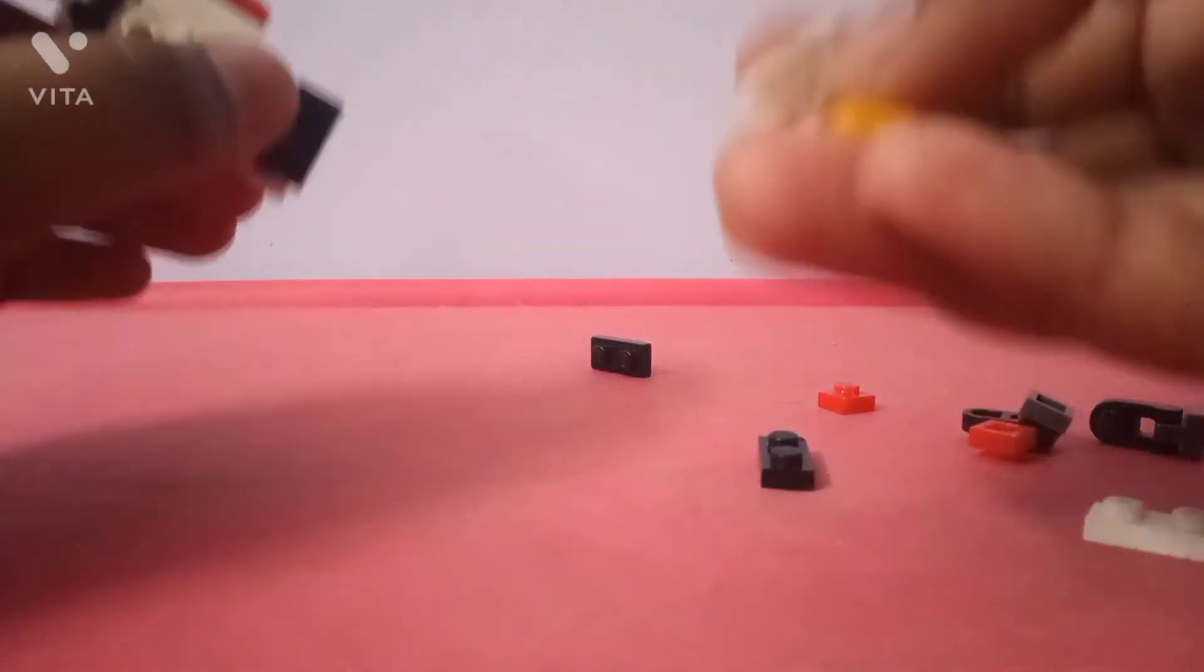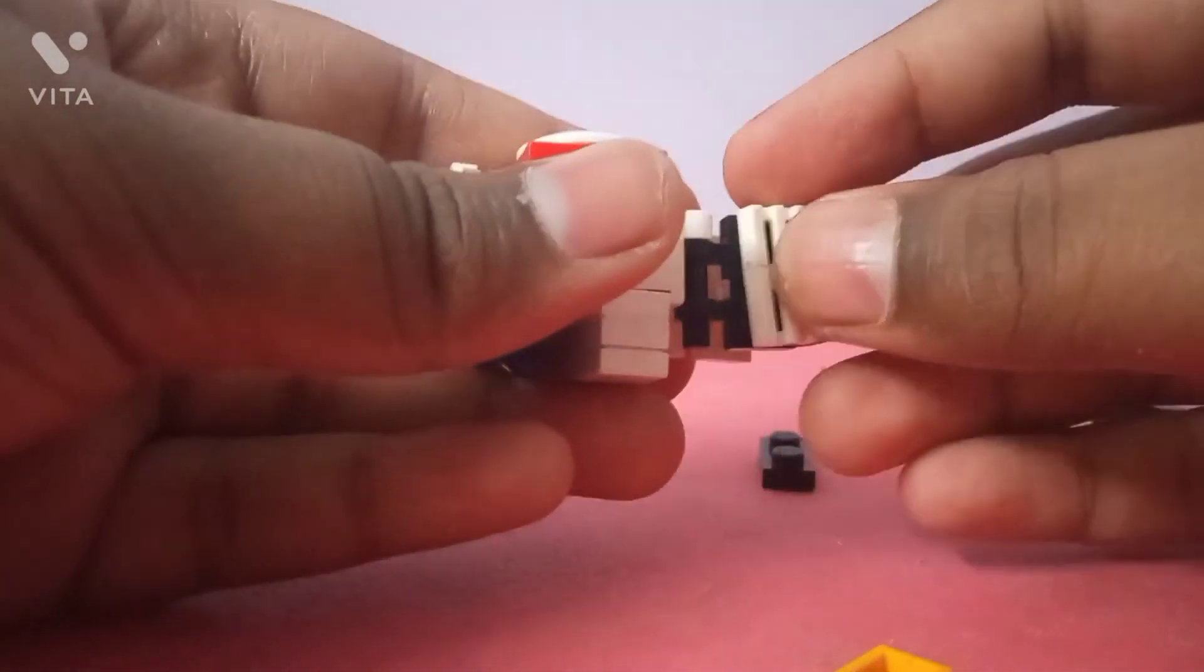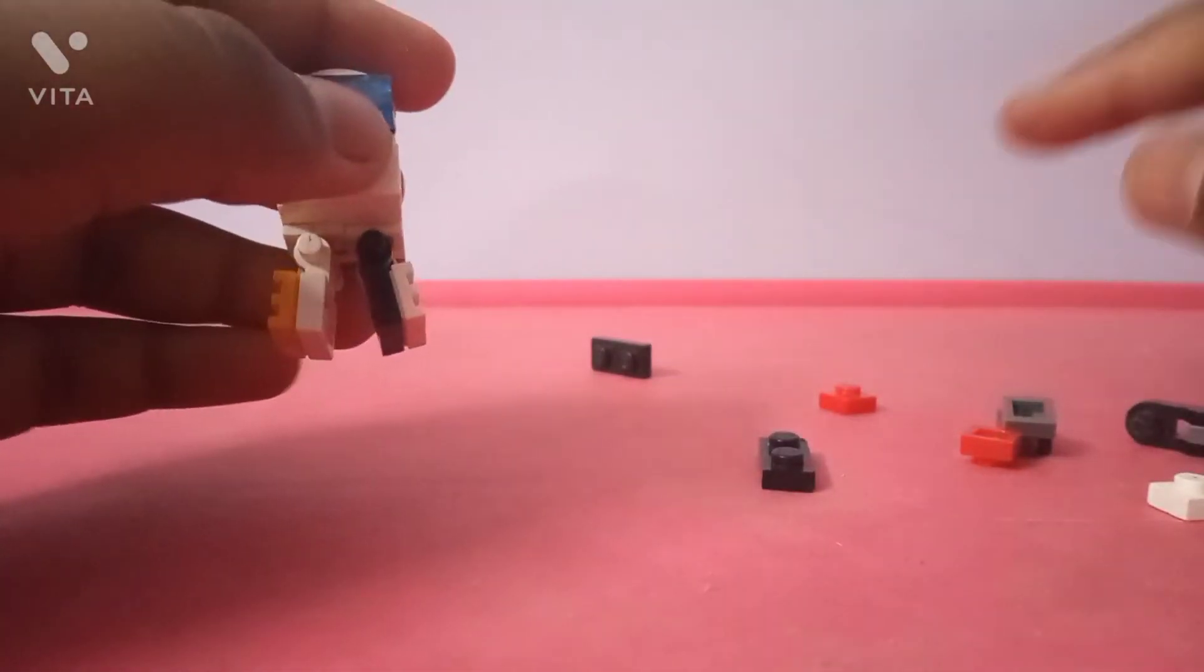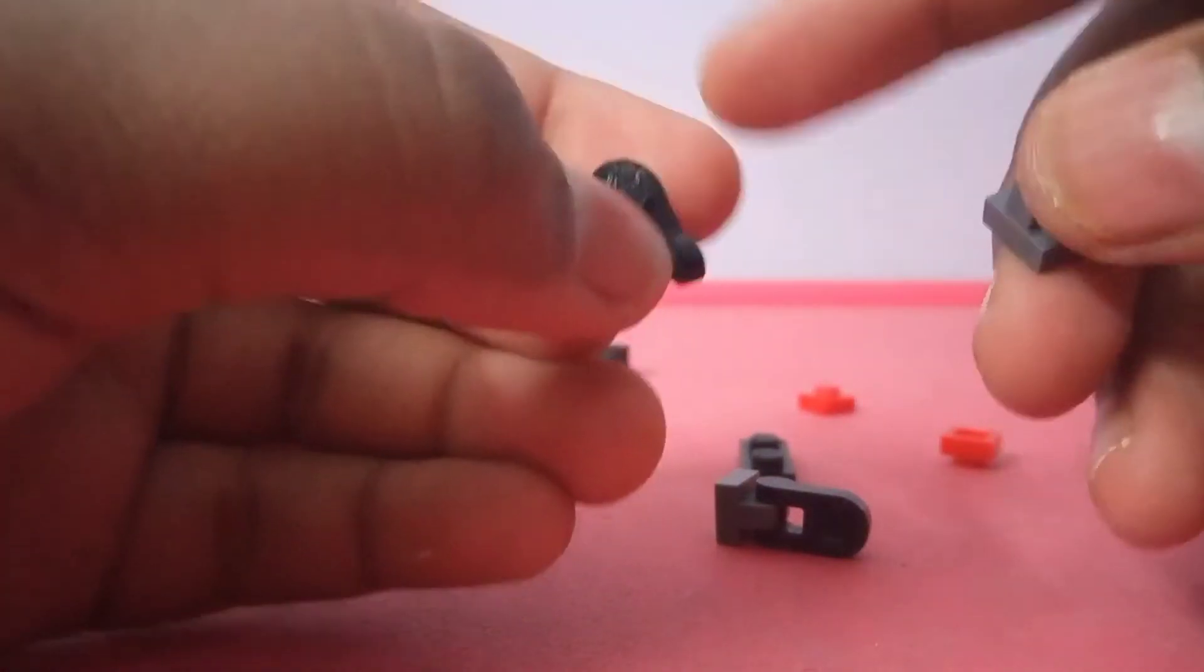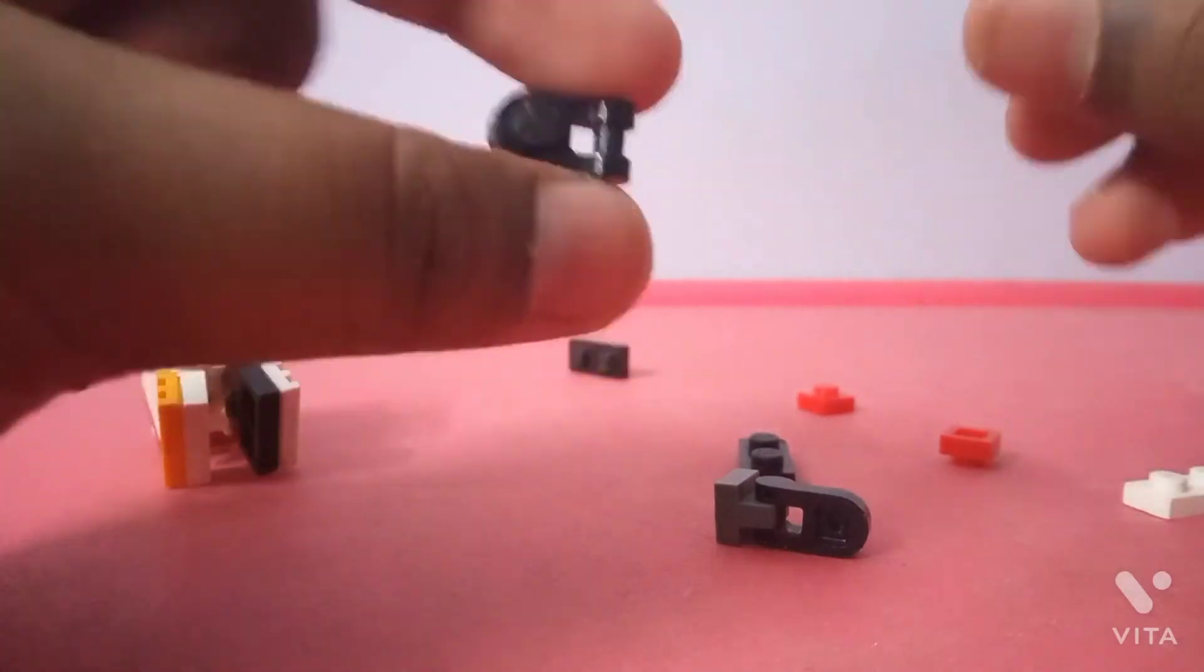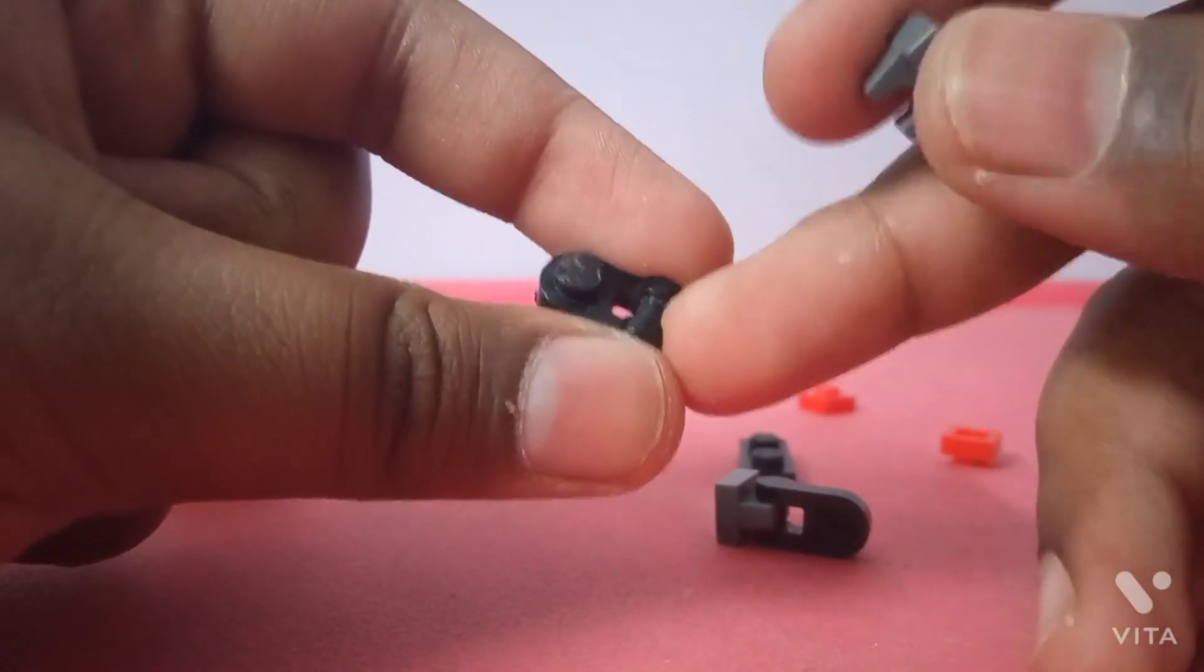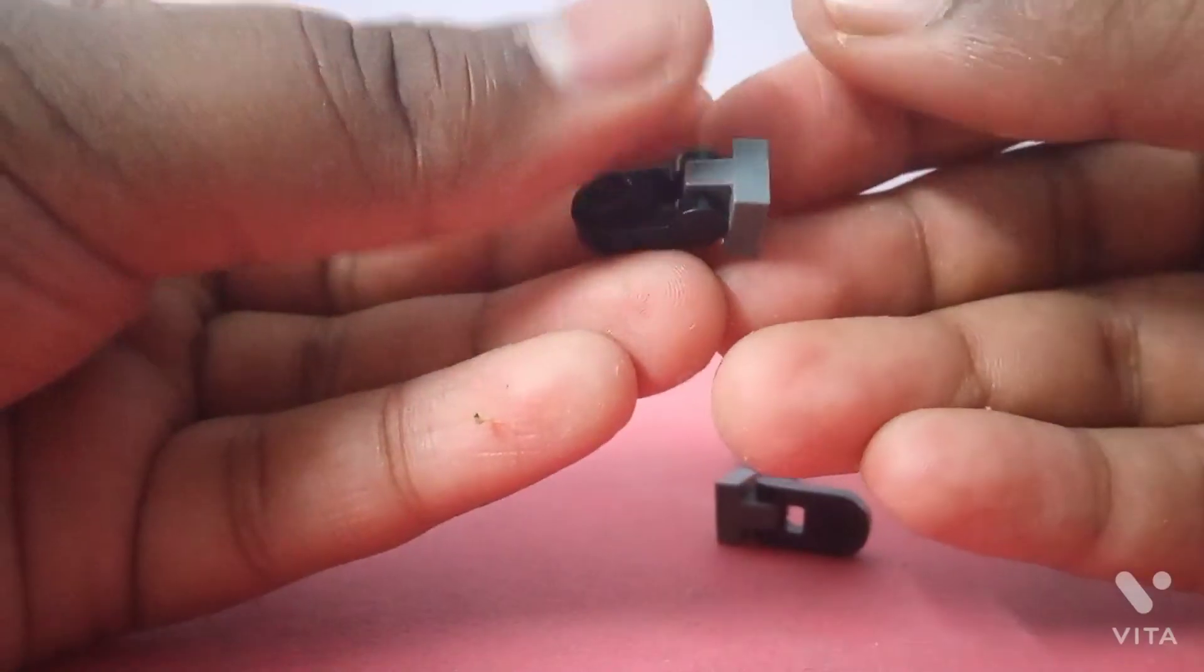Anyway, you just take your 1x2 tiles or 1x2 grills and put them on here just like that. Then you're gonna want to take one of these 1x1 modified plates with a bar like that, and then this one with one modified clip. If you want to know where you can get this piece, it is in the Lego Speed Champions McLaren Senna set. Then just connect them together and boom, you have something.